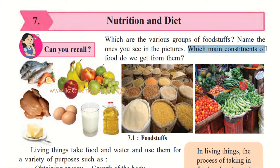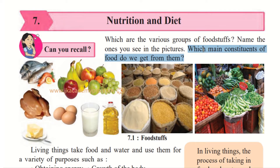Which main constituents of food do we get from them? Why do we eat all this food? We have already learnt about it — the constituents of food are the carbohydrates, proteins, fats, minerals, vitamins, etc. So all this we get in our food.